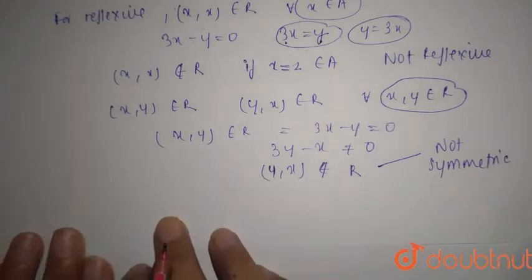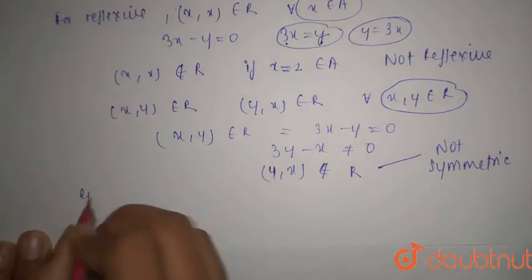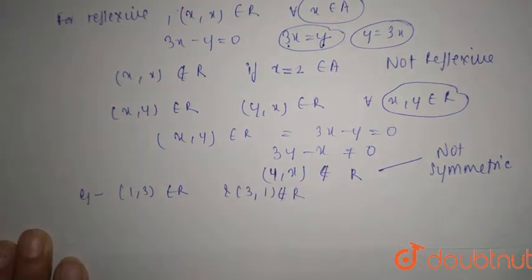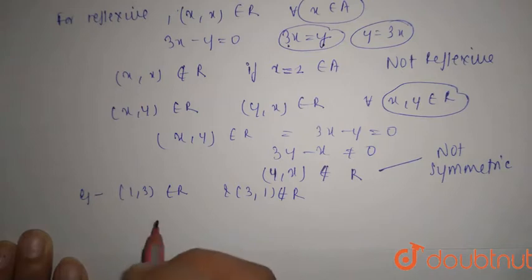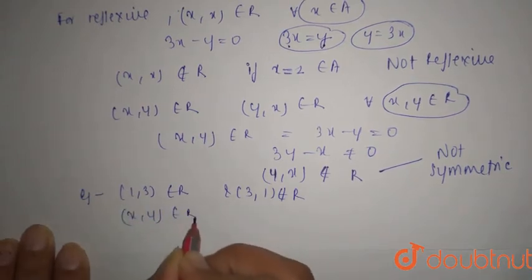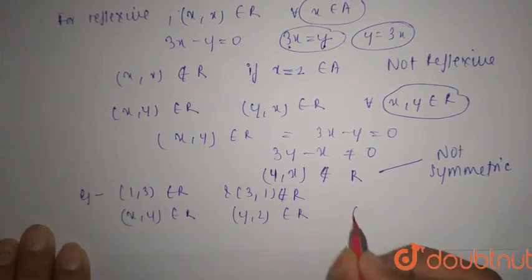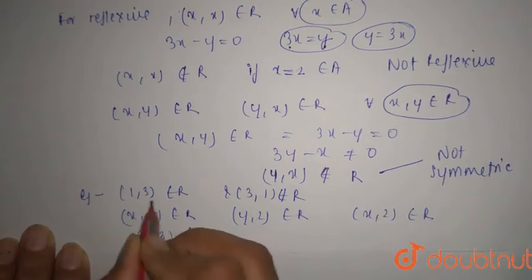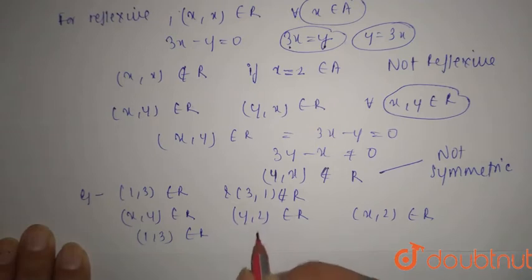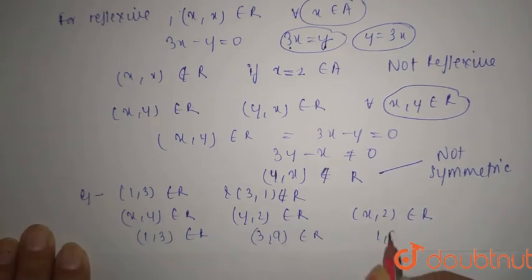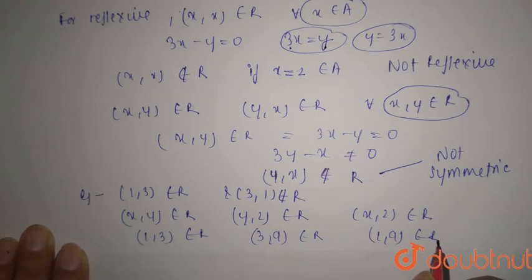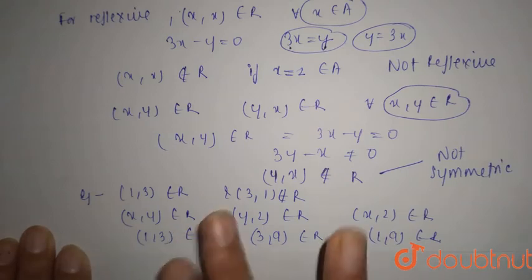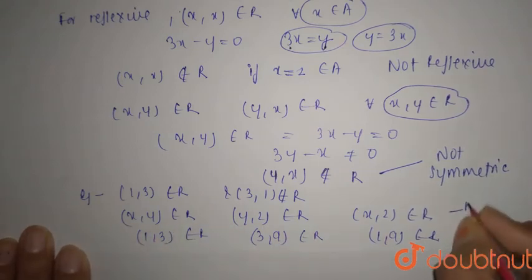Now, what about transitive? For transitivity, you can say that x, y belongs to R, y, z belongs to R, x, z belongs to R. So 1, 3 belongs to R, 3, 9 belongs to R and 1, 9 belongs to R. All the elements are not of same, so you can say that R is not transitive as well. It is not transitive.